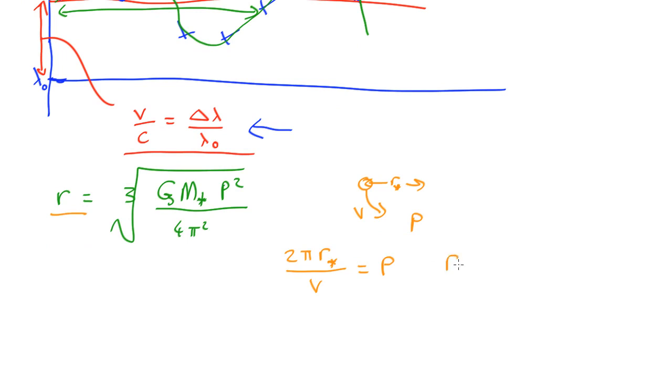So that means that r star, that is the motion, the reflex motion radius of the star, is going to be period times the velocity, which we've just measured using the Doppler effect from this, all over 2 pi.